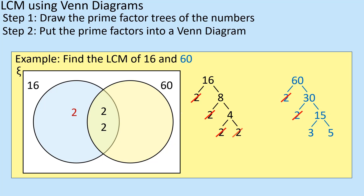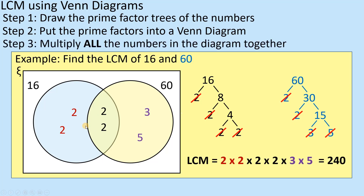Then I've got the extra 2 and 2 on one side, and the 3 and the 5 on the other side. To find the lowest common multiple, I just multiply everything that I see in the circles — everything in both circles. So that times that times that times that times that times that — I'm not going to repeat the common ones, since they're already counted once. So I do 2 times 2 times 2 times 2 times 3 times 5, and that gives me 240. So 240 is my lowest common multiple.